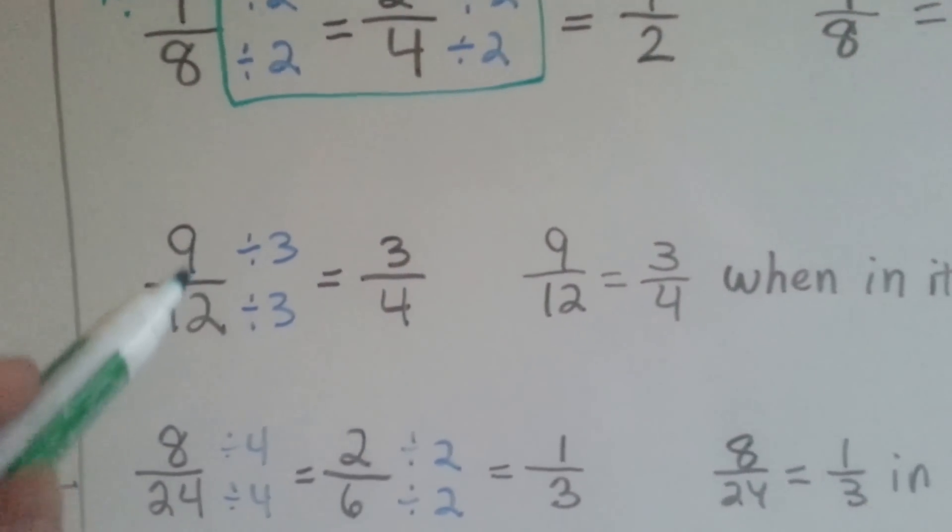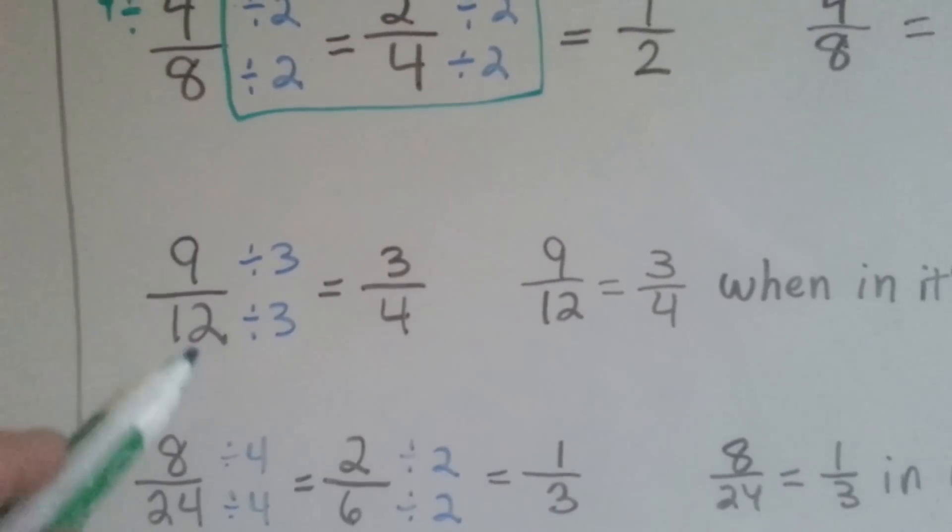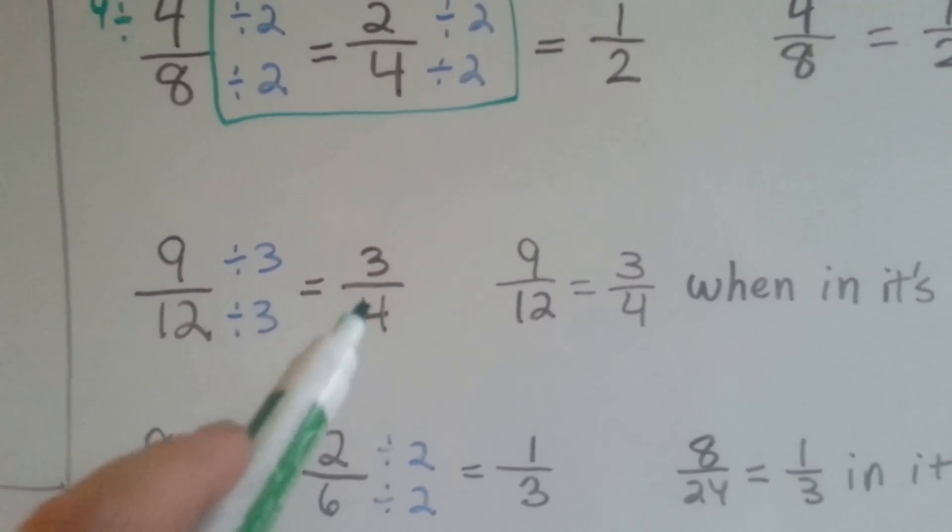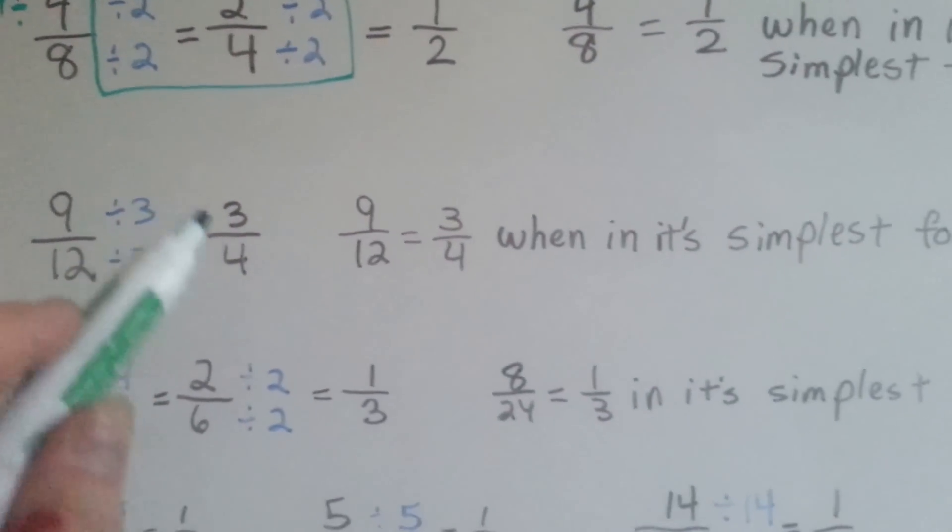9 twelfths, both the 9 and the 12 can be divided by 3. We choose a number that can go into both of them. 9 divided by 3 is 3 and 12 divided by 3 is 4. 9 twelfths in its simplest form is 3 fourths.